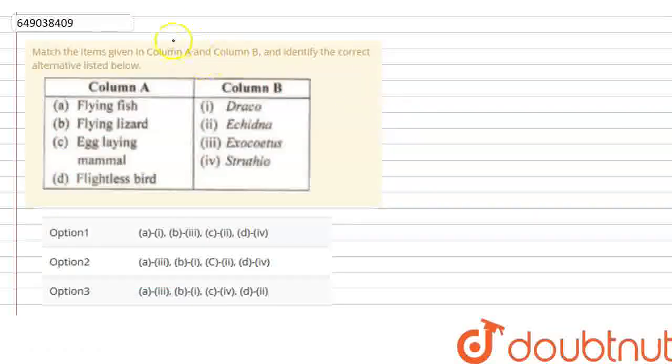Match the items given in columns A and B and identify the correct alternative listed below. We have flying fish, flying lizard, egg-laying mammal, flightless bird, then Draco, Echidna, Exocetus, and Struthio. The first one is Draco.